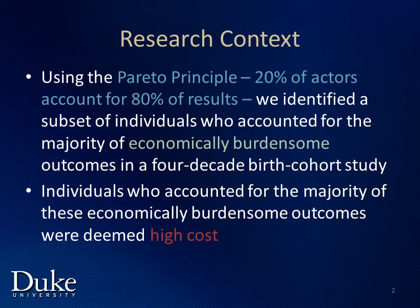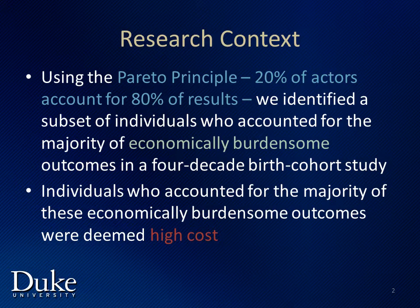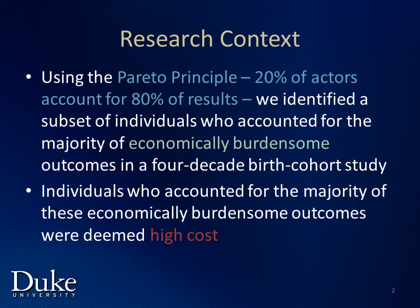The examples I'll be using are drawn from our research paper that uses the Pareto Principle — that is, the idea that 20% of actors account for 80% of results — to identify a subset of individuals who accounted for the majority of economically burdensome outcomes in a four-decade birth cohort study. In this paper, those individuals who accounted for the majority of these economically burdensome outcomes were deemed high cost.